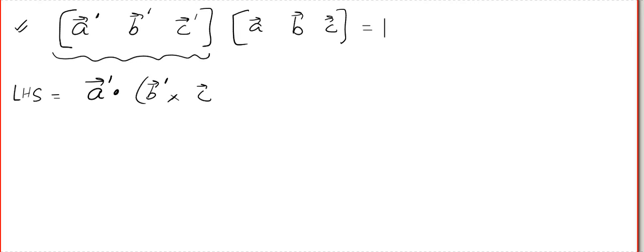b cross c of course with the dashes and here we have our STP. Now, look at this STP is a number. It is a scalar. So, I am going to keep that STP in the front kind of like 7 or 5 or something and I will manipulate this.